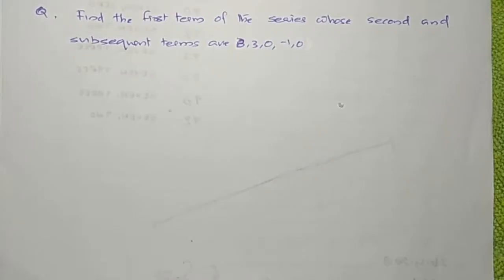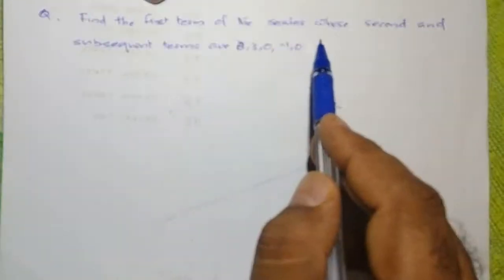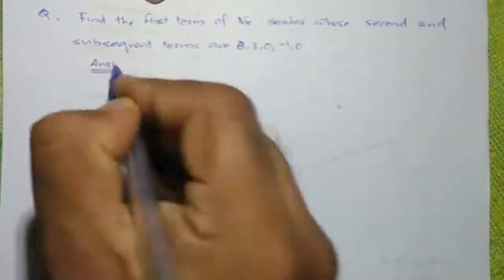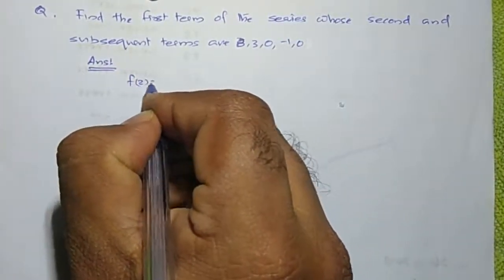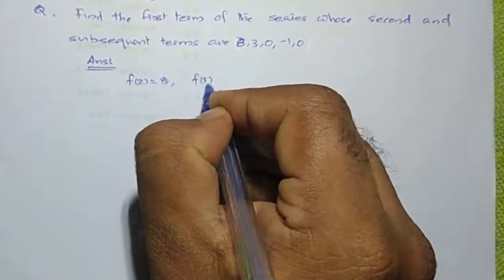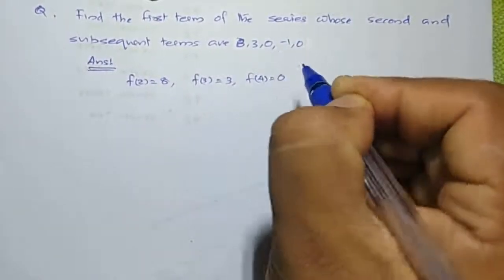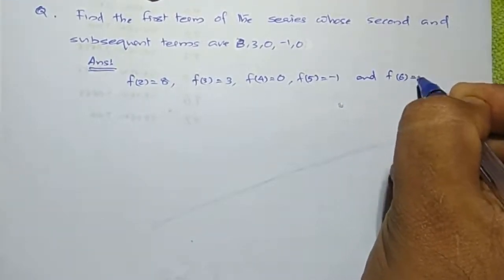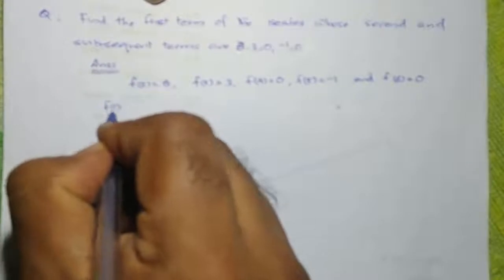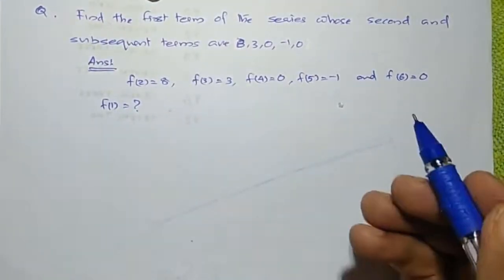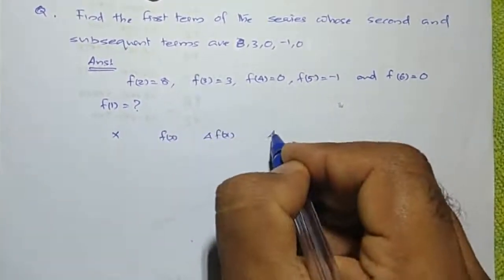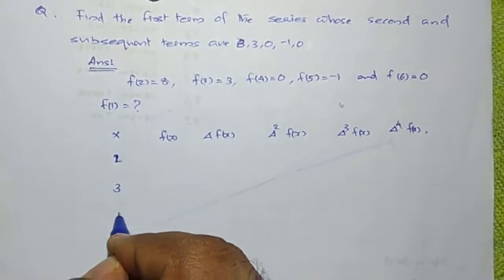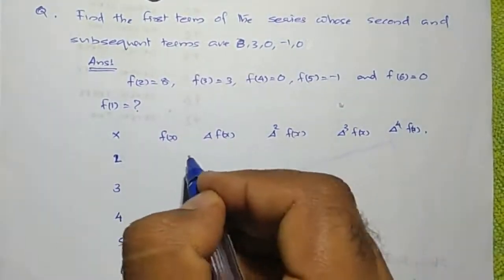Here is another problem: find the first term of the series whose second and subsequent terms are 8, 3, 0, minus 1, and 0. We are given f of 2 equals 8, f of 3 equals 3, f of 4 equals 0, f of 5 equals minus 1, and f of 6 equals 0. We need to find f of 1, the first term. Let us make a forward difference table first.